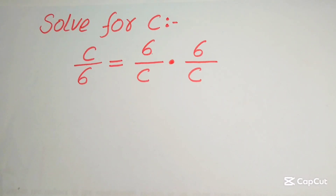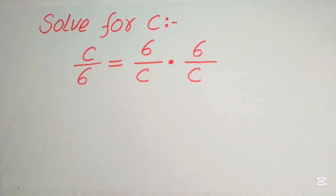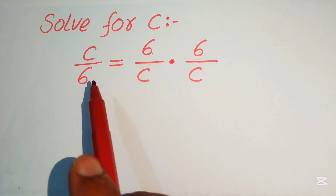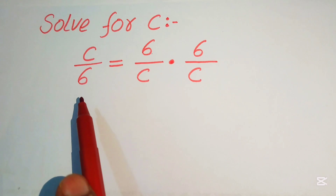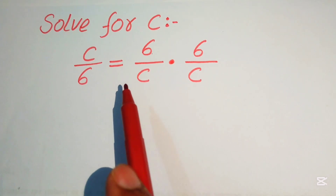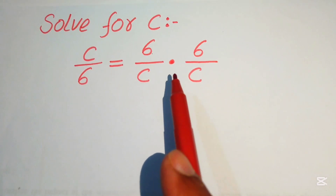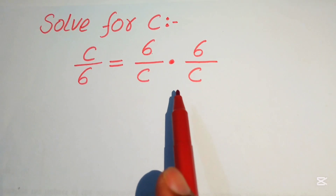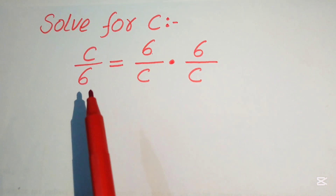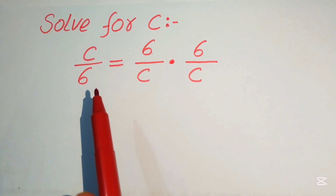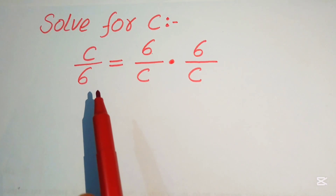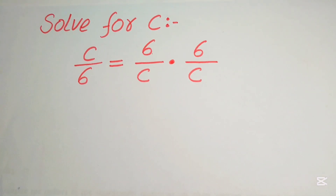Hello everyone, welcome. We solve this nice Math Olympiad algebra problem. Here we have C over 6 equals 6 over C multiplied by 6 over C. We solve this problem for the values of C.